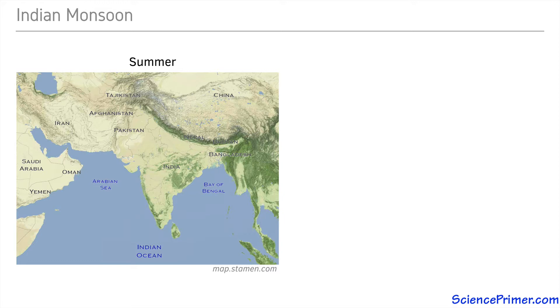A classic example is the Indian monsoon. In the summer, a low-pressure system forms over the subcontinent, causing air to be drawn from the surrounding oceans. This moisture-laden air causes the dramatic stormy weather associated with summer monsoons.